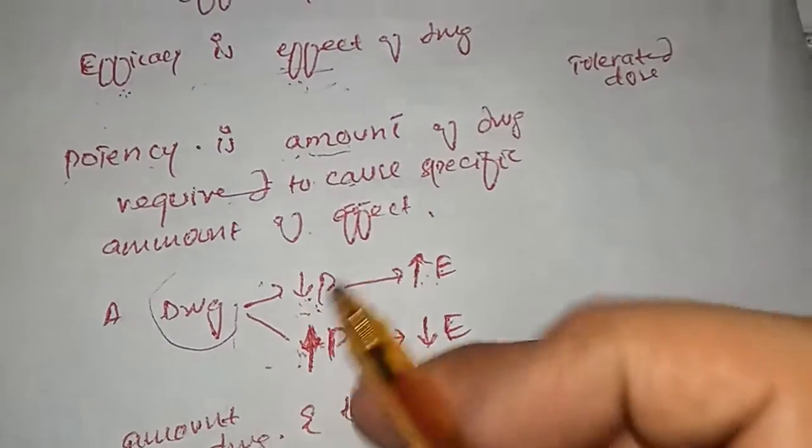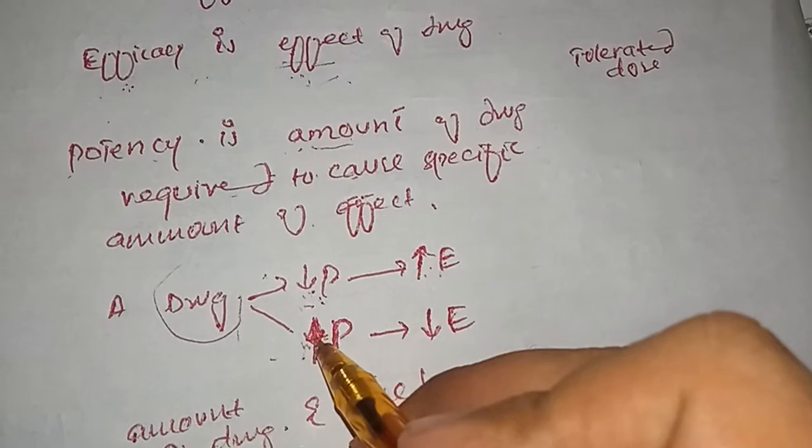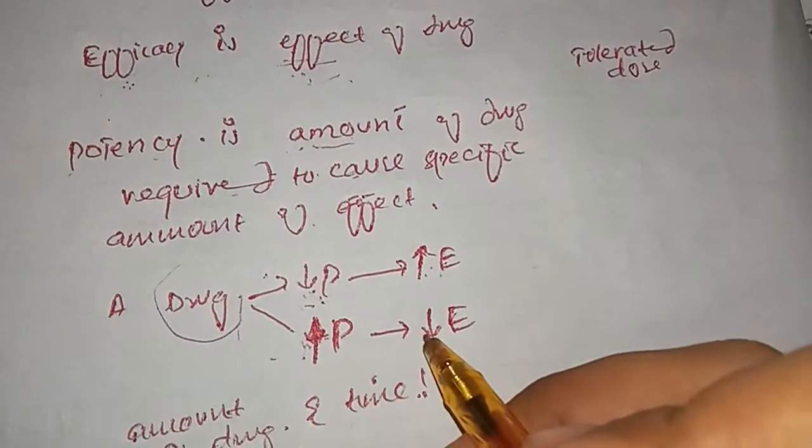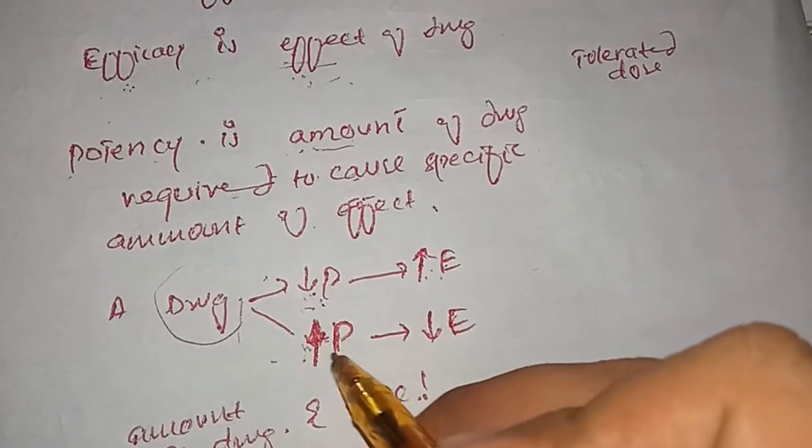Sometimes we need a low potent drug that will be having high effect, and sometimes we do increase the potency of the drug but efficacy is not achieved. So what we do then? We increase further the potency of the drug in order to get the desired effect.